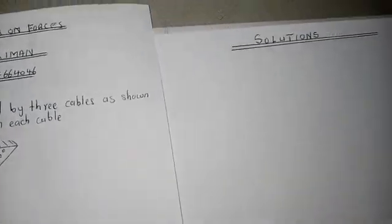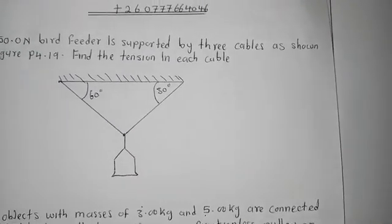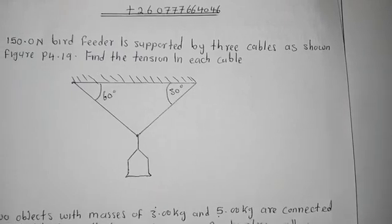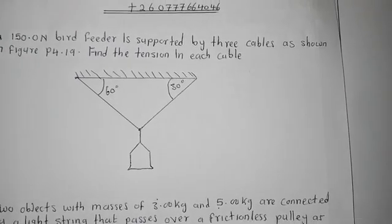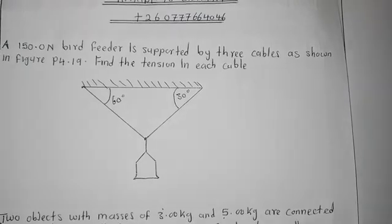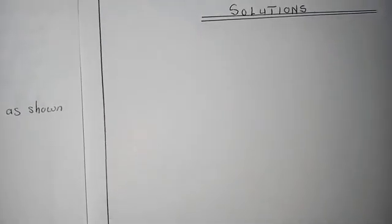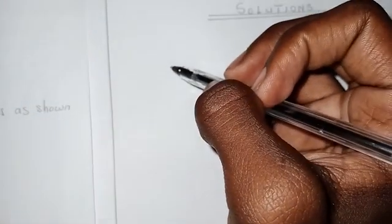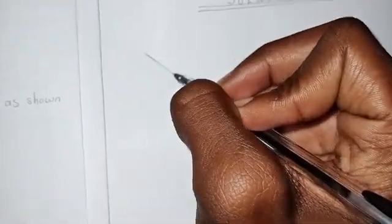Let's go into the solutions. How do we find the tensions in each cable? When you look at the diagram, you are supposed to make some changes so that your free body diagram is able to give you all the information that you need. The first thing to do is redraw the diagram so that we can make it in a way that is easy for us to understand.